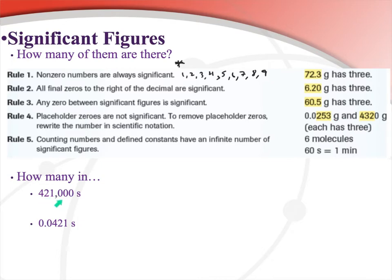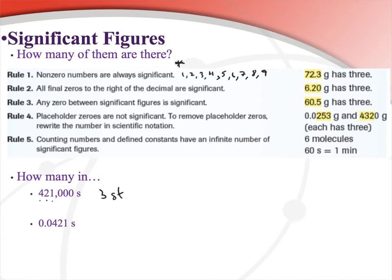Let's look at some examples. For 421,000 seconds: the 4, 2, and 1 count because they're non-zero. For the three trailing zeros — there's no decimal point, so rule two doesn't apply. The zeros aren't between significant figures, so rule three doesn't apply either. They're simply placeholders. So 421,000 only has three significant figures.